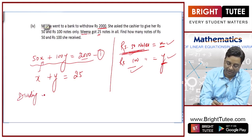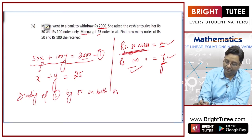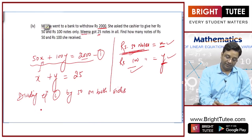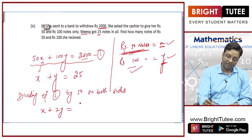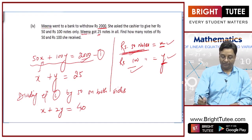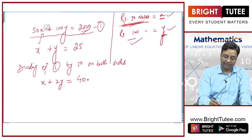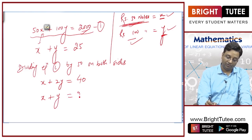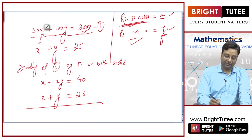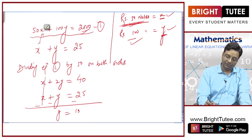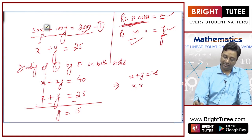Dividing equation 1 by 50 on both sides: x plus 2y equals 40. And the second equation is x plus y equals 25. If I subtract these, x gets cancelled and y is equal to 15. Since x plus y was 25, x is equal to 10.